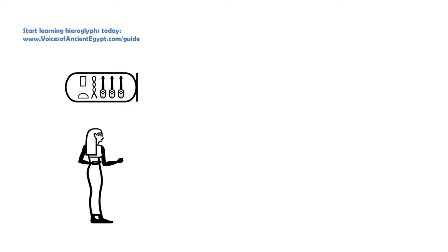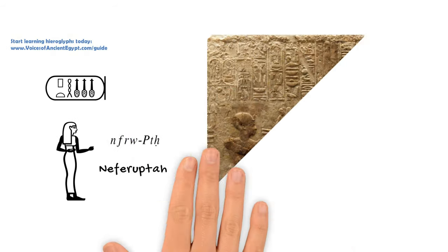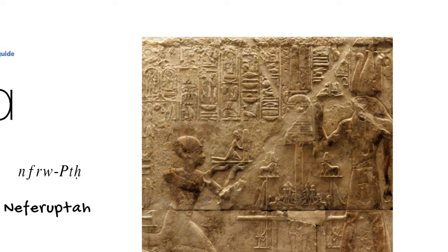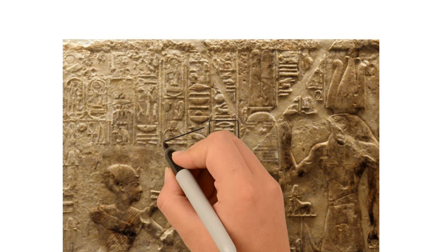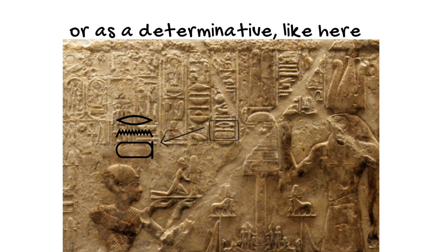And then later on for some royal children as well. And because of the close association with the king's name, it even started to be used in place of the word name, that is ren, sometimes when talking specifically about the king's name.